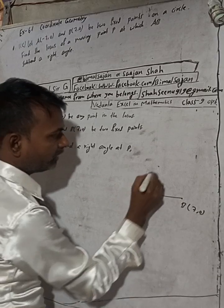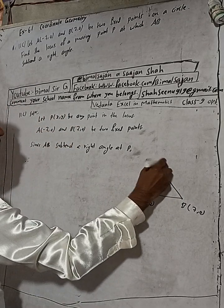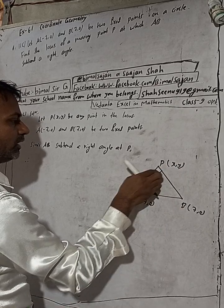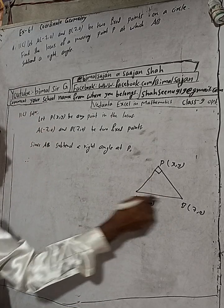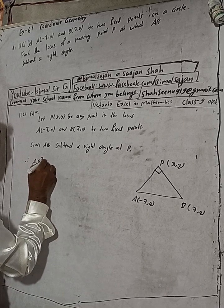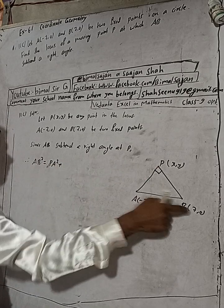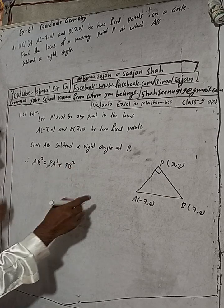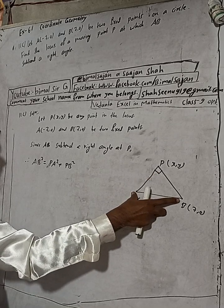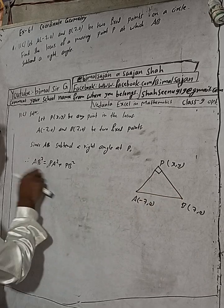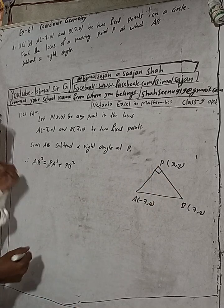Since AB subtends a right angle at P — that means angle APB is 90 degrees. This is our point P(x, y). Since angle APB is a right angle at P, therefore AB is the hypotenuse. By Pythagoras theorem: AB² = PA² + PB². The side opposite to 90 degrees is the hypotenuse, which is AB, and the sum of the squares of base and perpendicular equals it.